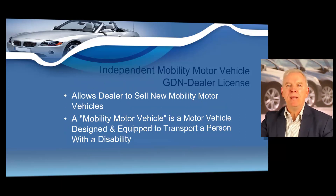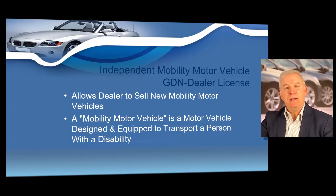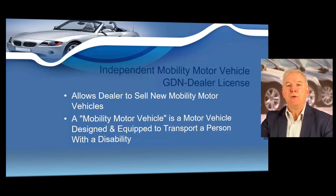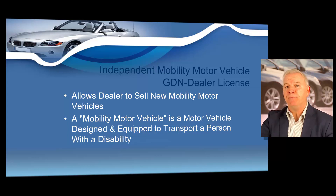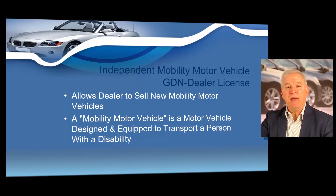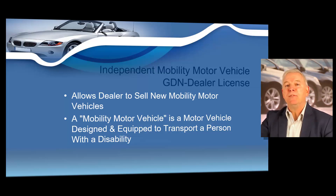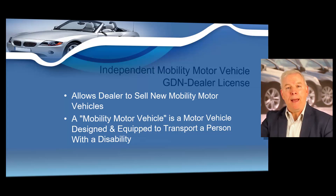An independent Mobility Motor Vehicle Dealer License, or GDN, allows you to sell new and used vehicles that have been converted into mobility vehicles at a specific location. You must have an agreement with the licensed franchise dealer of the underlying track chassis of the mobility vehicle. A mobility motor vehicle is designed to transport a person with a disability. This type of license also requires the applicant to hold a converter's license.